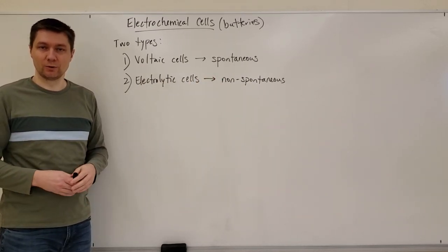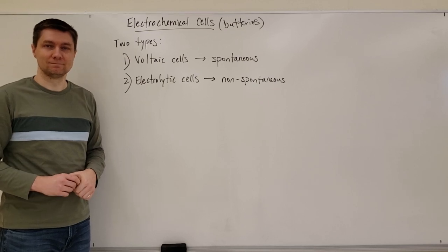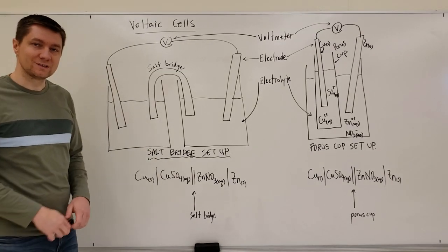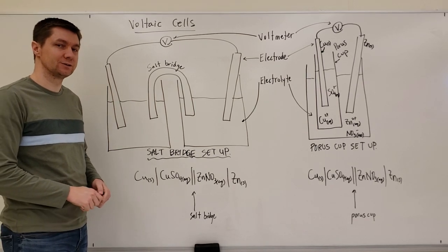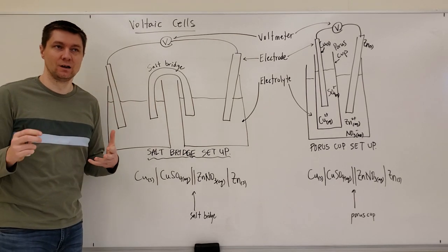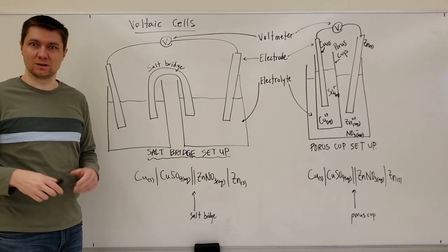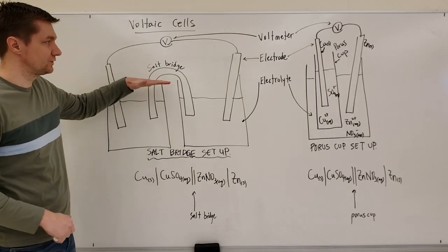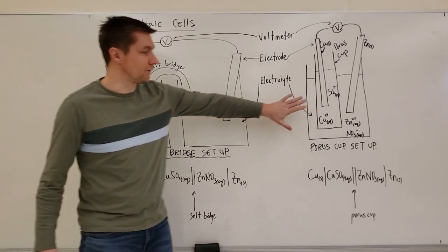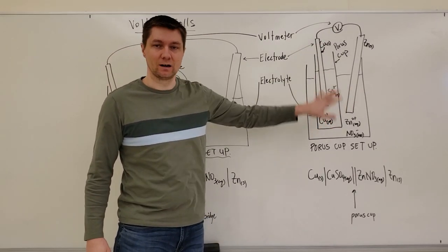We're going to hit up examples for both types. The first thing to point out is the setup of these cells. The voltaic cell has two different types of setups: the salt bridge setup shown in this diagram, and the porous cup setup shown in this diagram over here.